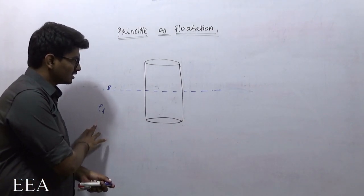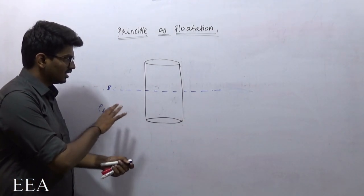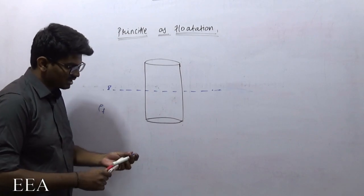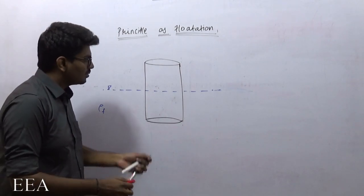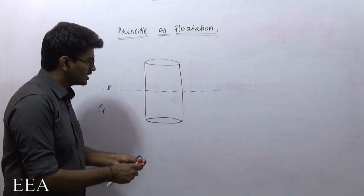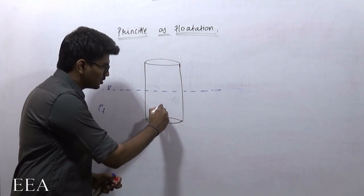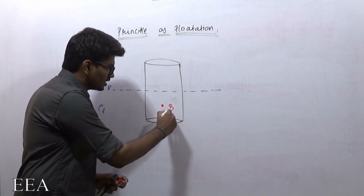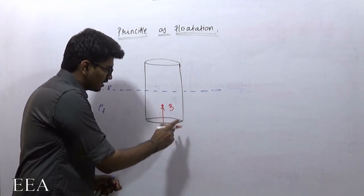First thing — it is a static fluid. If it is a static fluid, there will not be any shear, there will be only pressure. Due to the pressure difference, there will be an upward force — a buoyancy force — which is going to act at the center of buoyancy.